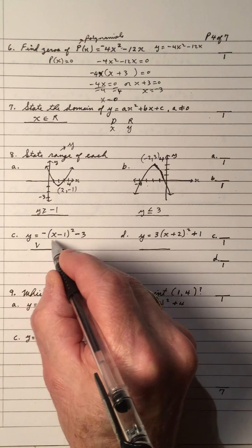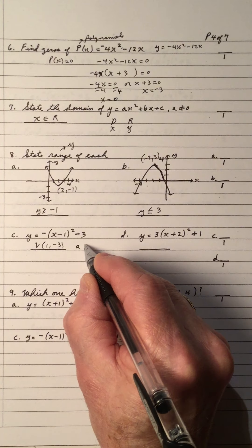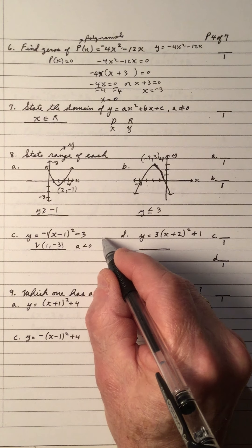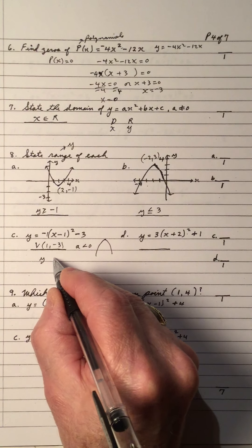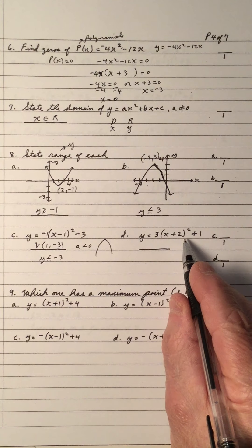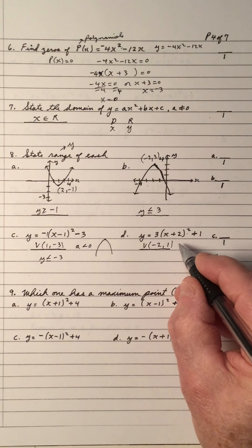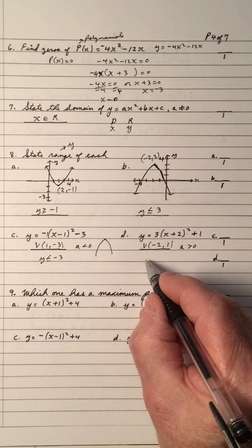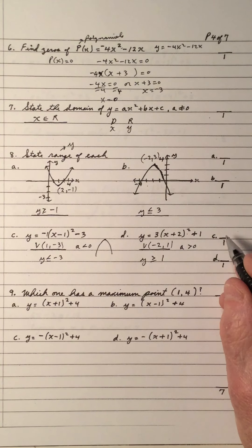For the vertex at (1, -3) where a is negative 1 (less than 0), the parabola opens down, so the range is y less than or equal to negative 3. For the equation with vertex at (-2, 1) where a equals 3 (greater than 0), the parabola opens up, so the range is y greater than or equal to 1. Give yourself a mark each if both are right.